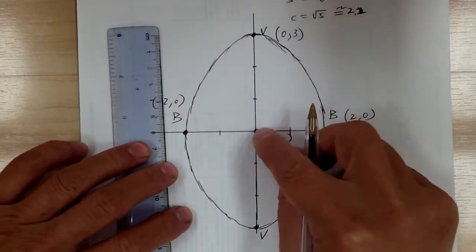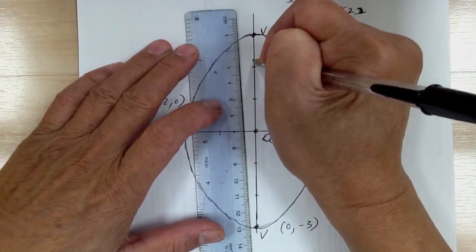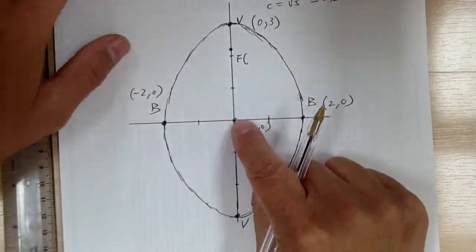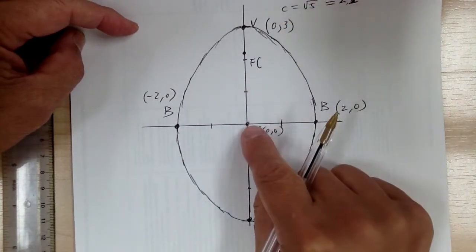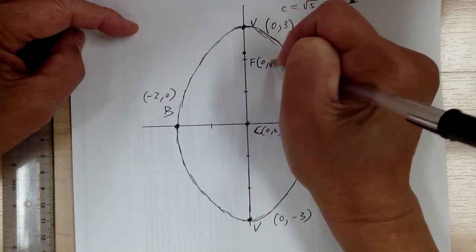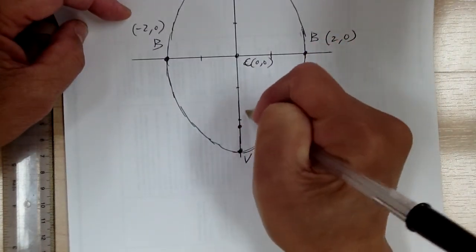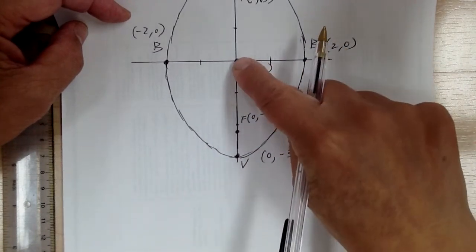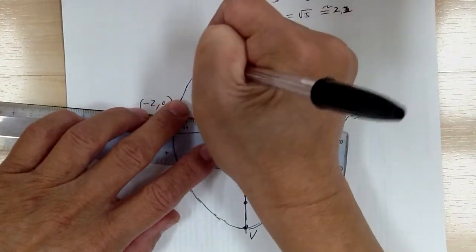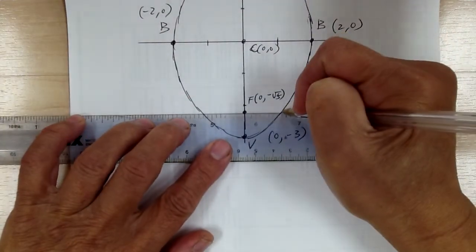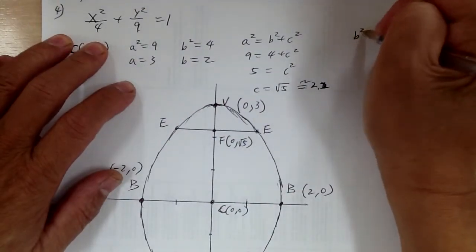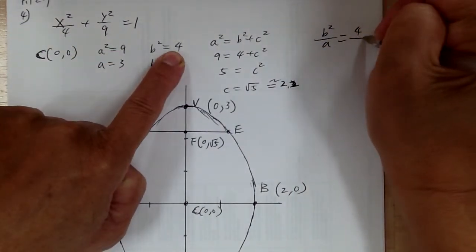C is about 2.2, so it's along the y-direction — that's the F. It's going up by square root of 5. Everything starts from the center. When you go up, you add; when you go down, you subtract. So the foci are at (0, √5) and (0, -√5). There are 4 E points. To get them, b squared over a equals 4 over 3.